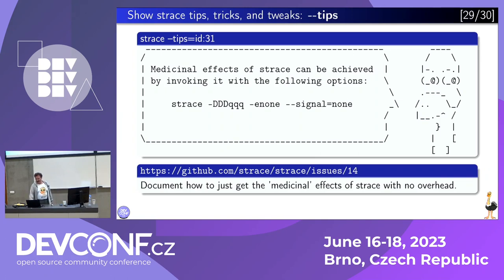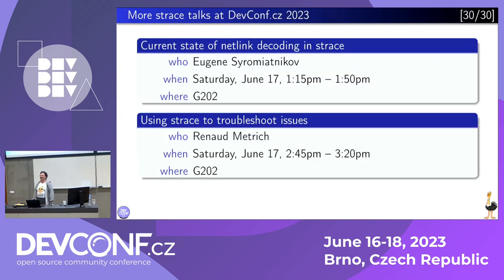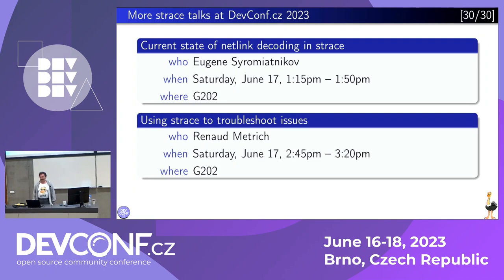Tomorrow you can attend a few more talks in this kind of unofficial mini-conference about strace. Tomorrow, Fusion would be talking about the current state of netlink decoding. And Renaud would be talking about using strace to troubleshoot issues. This is going to be in room G202. Please find it. Thank you, and I'm ready to answer your questions.